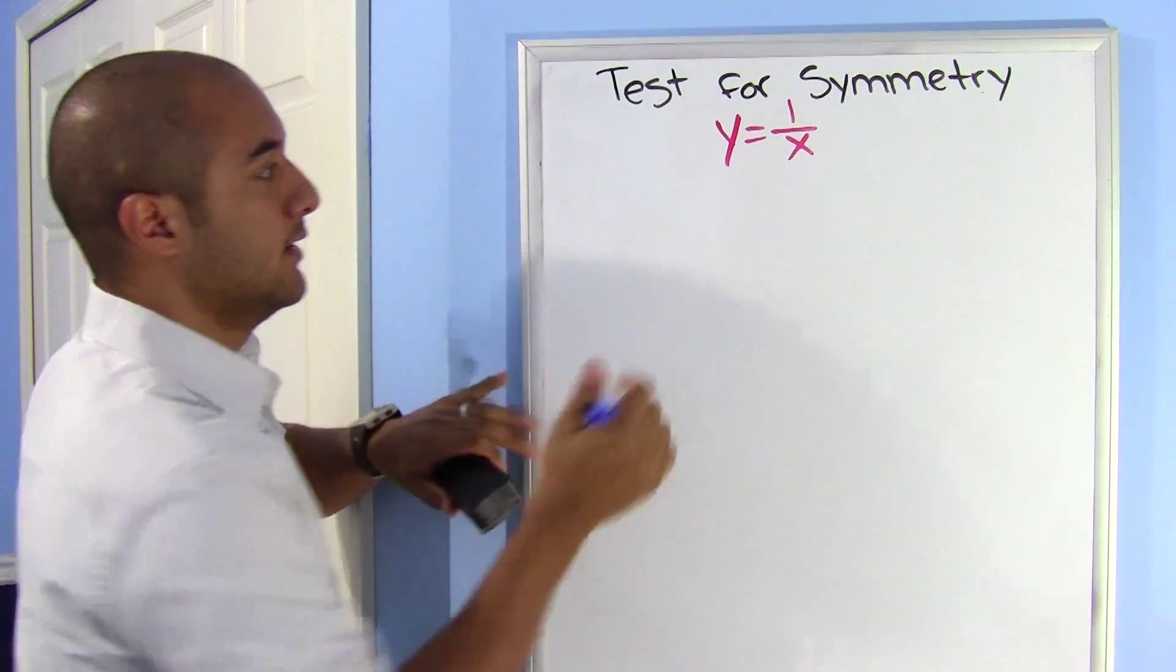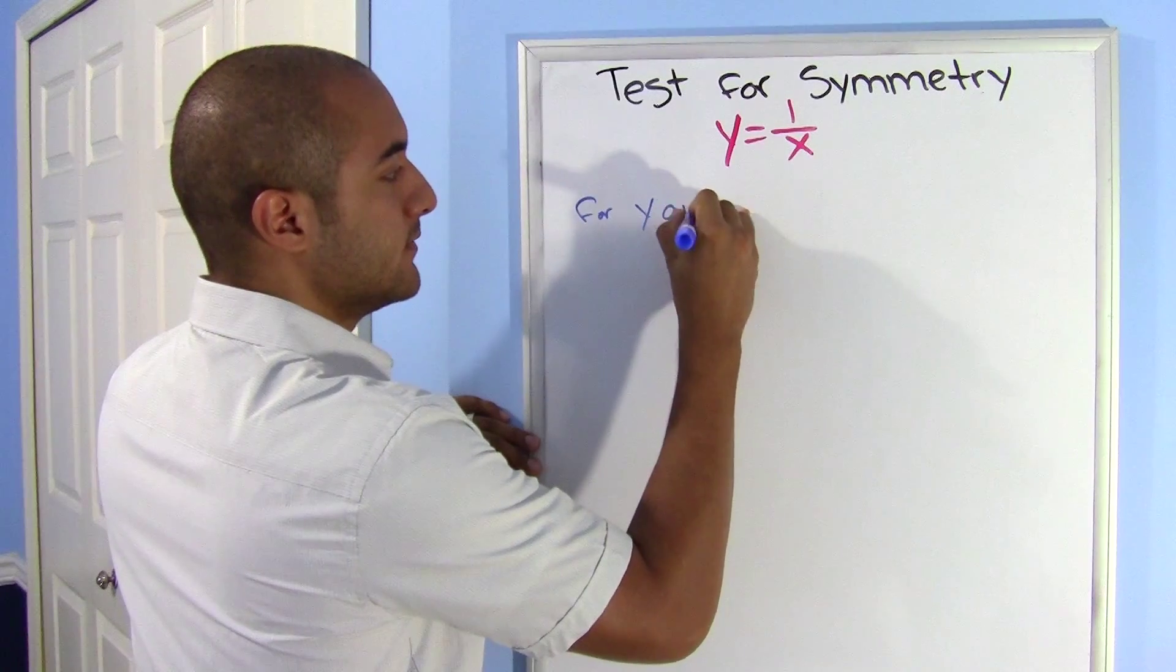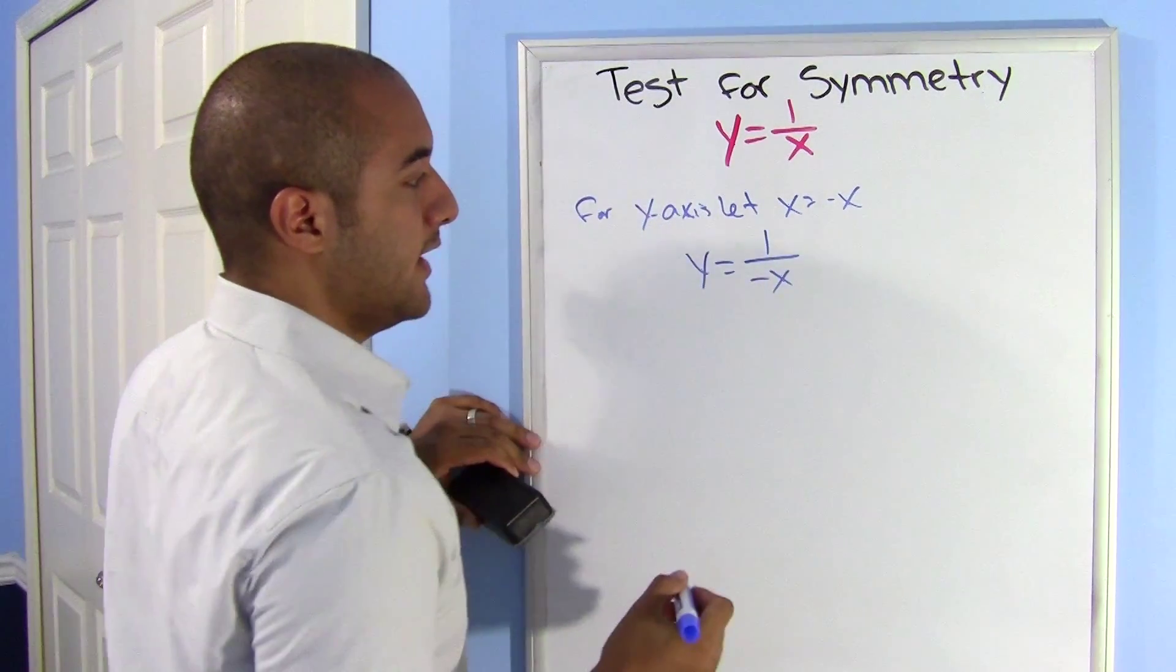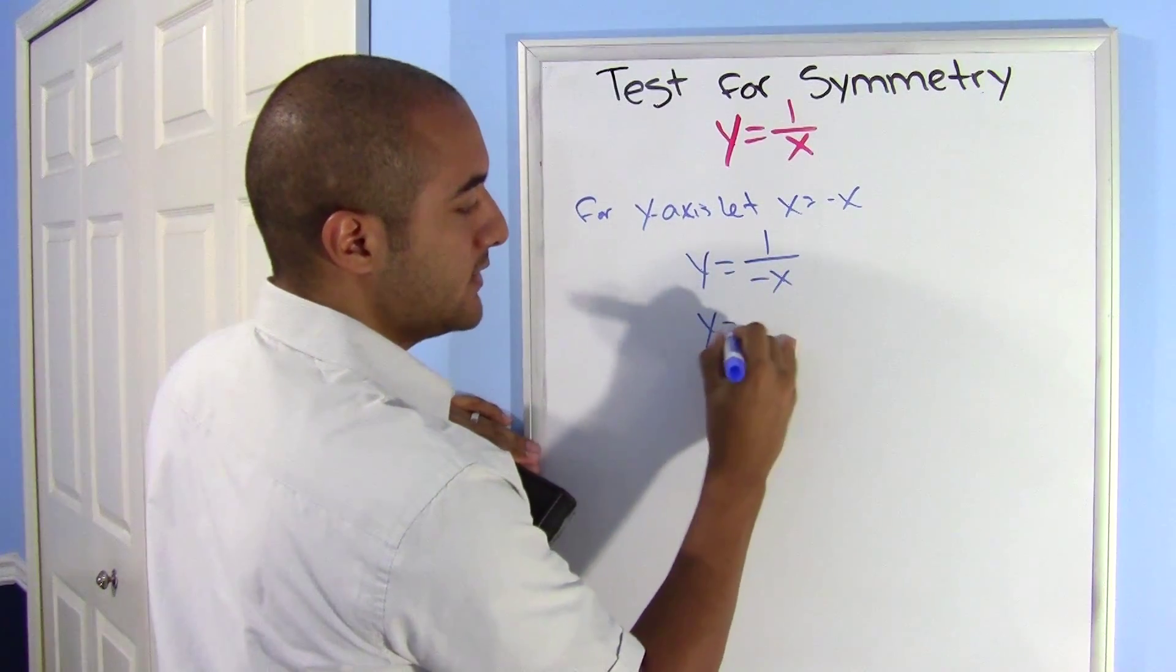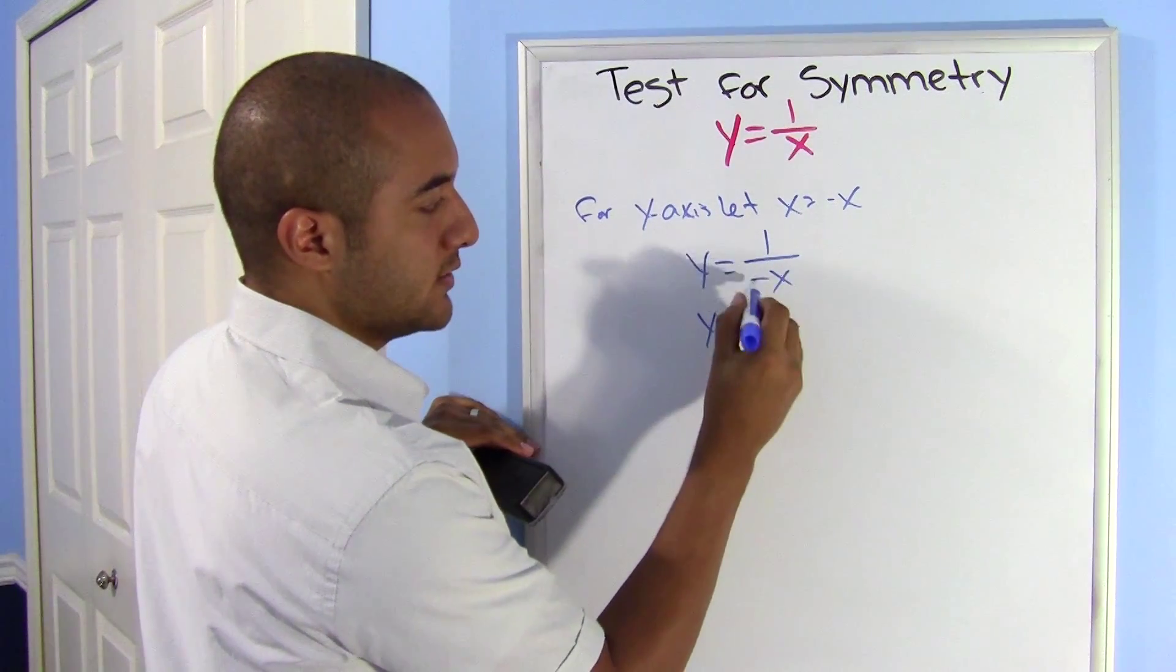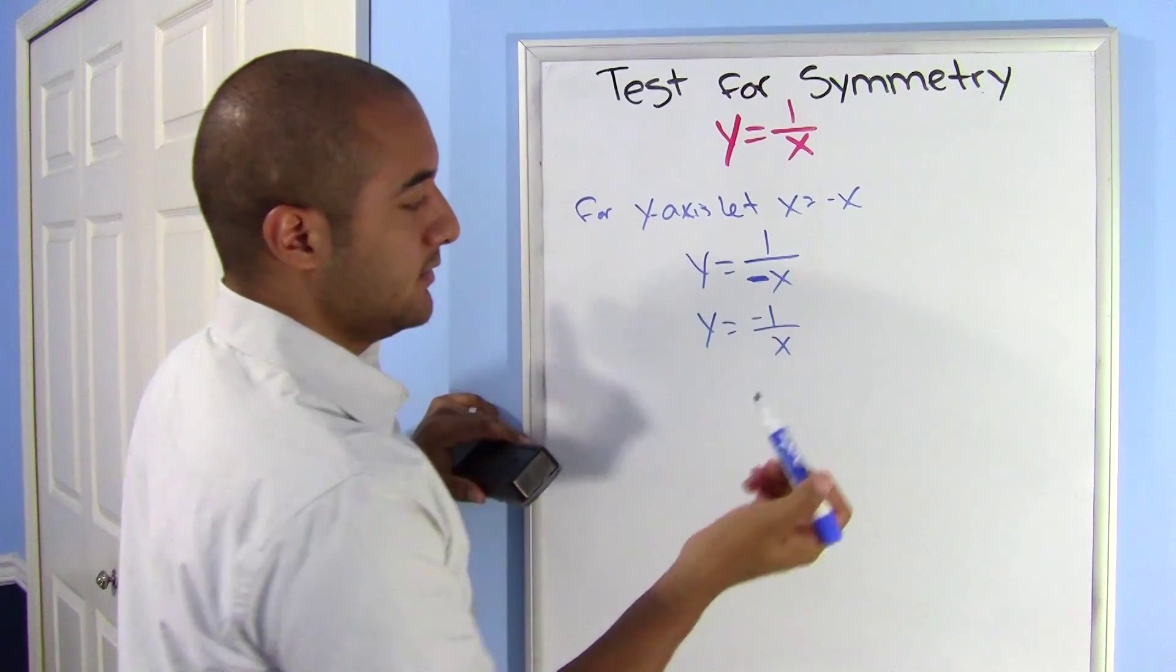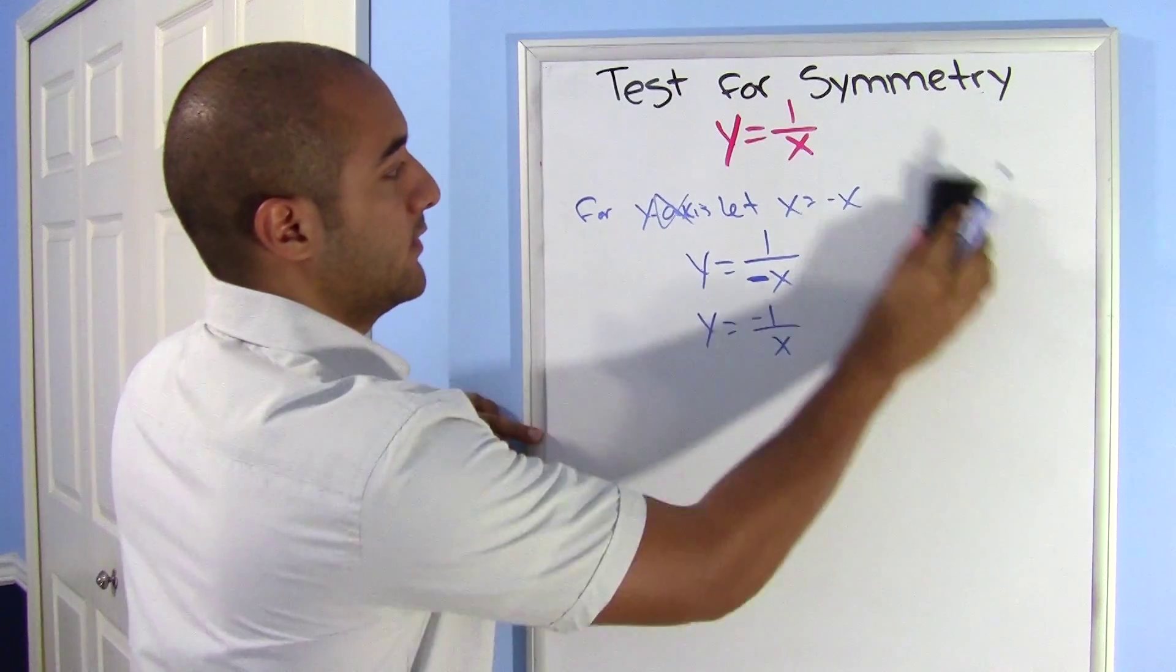Now we test our y. For y-axis, let x equal negative x. So y equals 1 over negative x. There's nothing else I can do. The only thing I can really do is this: y equals negative 1 over x, because we actually usually never leave negatives in the denominator. We move them up to the numerator, and that still does nothing for me because it's not the same. So it's not symmetric about the y.